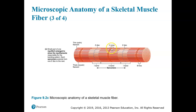The H-zone is the distance between the actin filaments in the middle of the sarcomere. Whenever the muscle fiber is at rest, the H-zone is larger, and whenever the muscle fiber is fully contracted, the H-zone actually disappears. Let me show you what I mean by that.